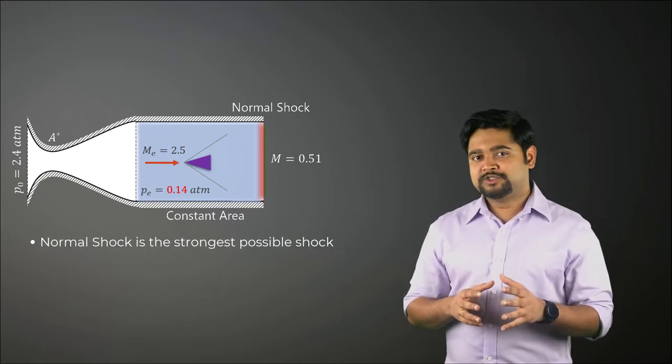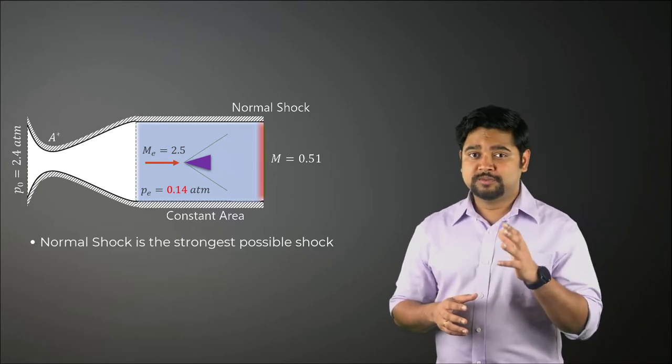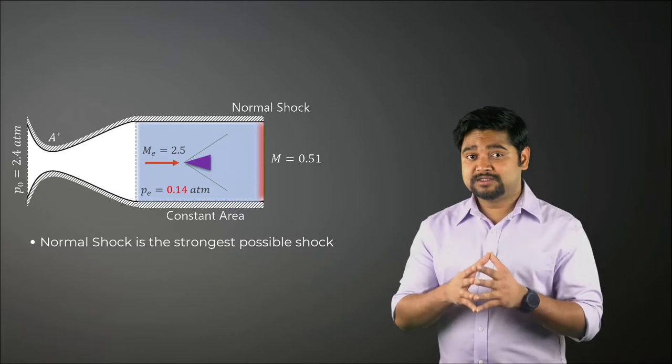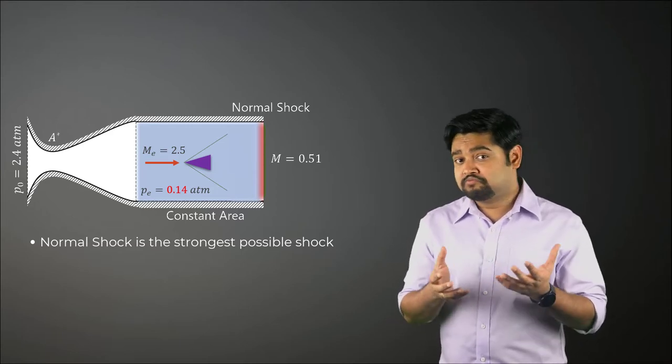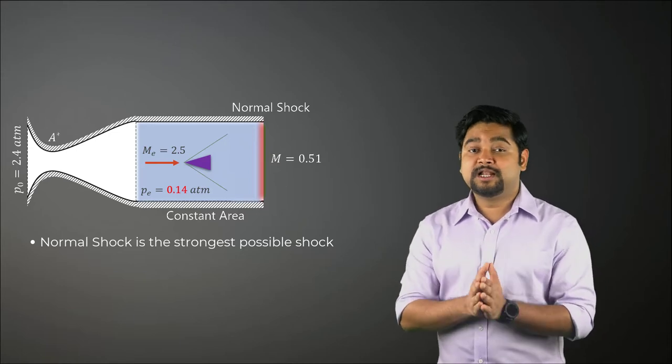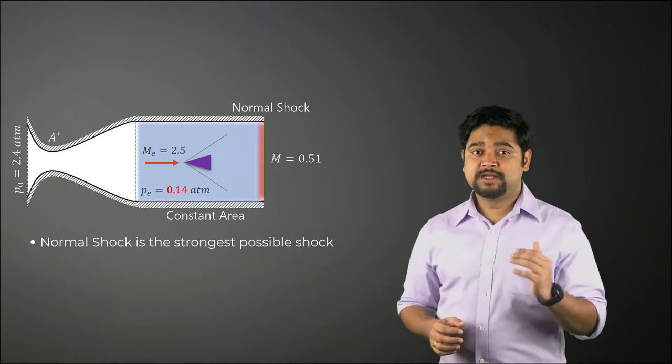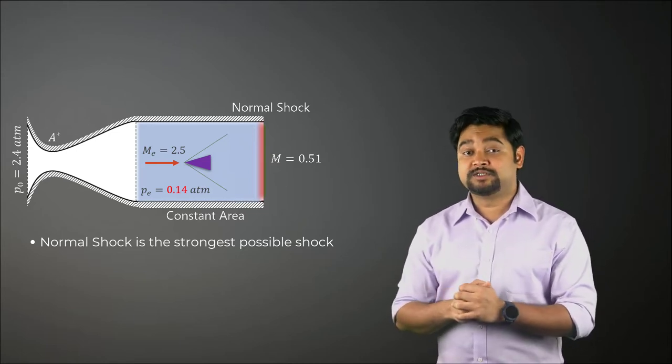Firstly, a normal shock is the strongest possible shock which creates the largest pressure loss. So maybe if we can replace it with weaker shocks, then we can help reduce the total pressure loss and the required reservoir pressure.